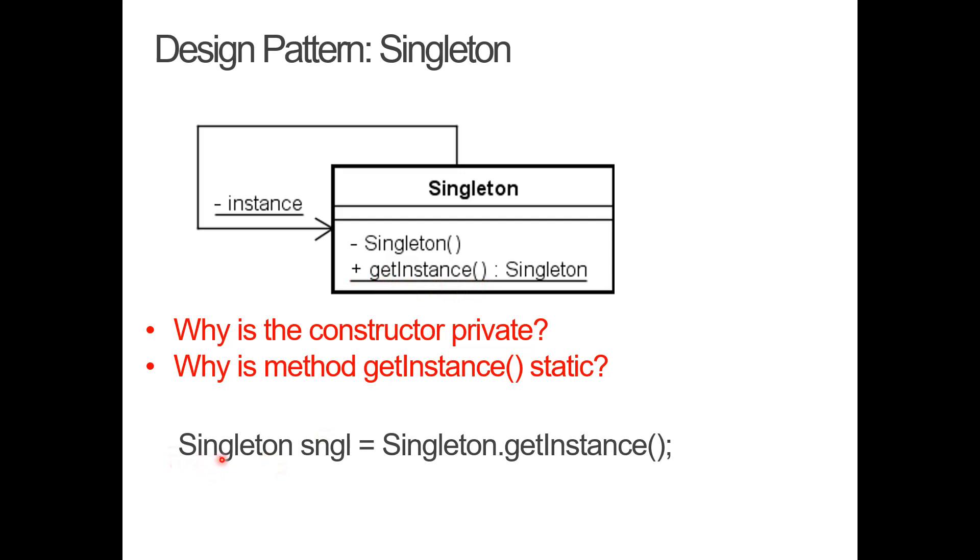I want to retrieve an instance of the singleton. I call it single. And because the getInstance is static, I can call this method on the class itself rather than on the instance. Okay. So, this is the way to retrieve my singleton.